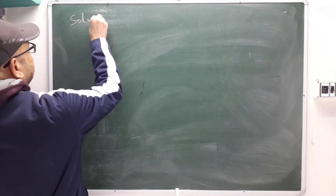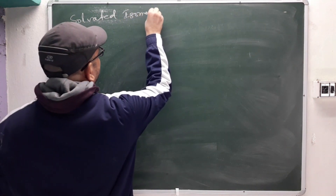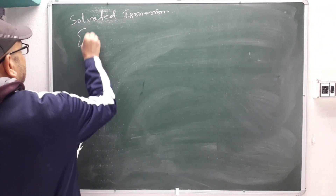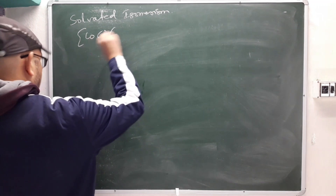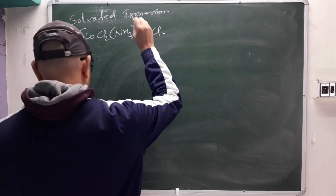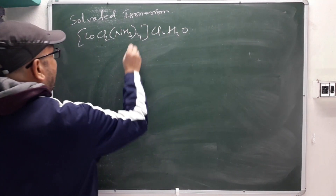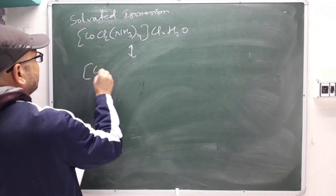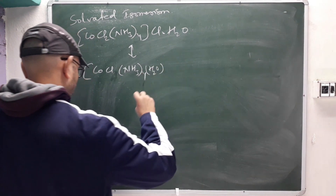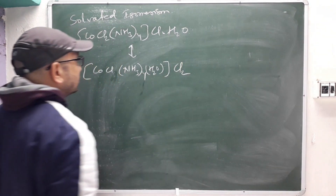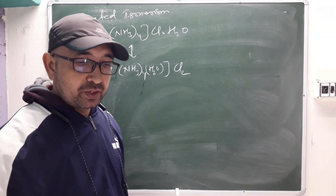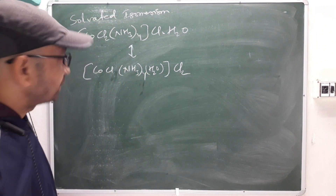Solvation isomerism: for example, [Co(NH₃)₄Cl₂]·H₂O and [Co(NH₃)₄(H₂O)Cl]Cl₂ — water can be inside or outside the coordination sphere, giving different solvated isomers.